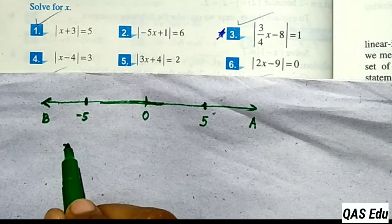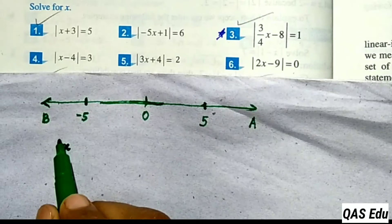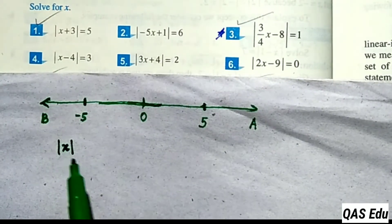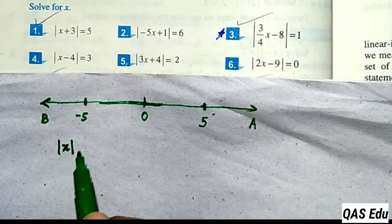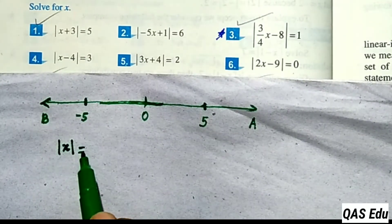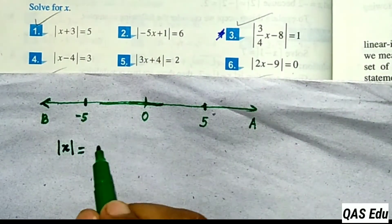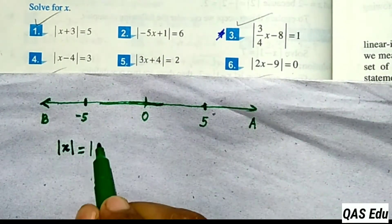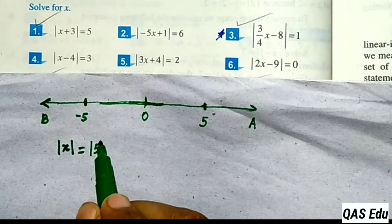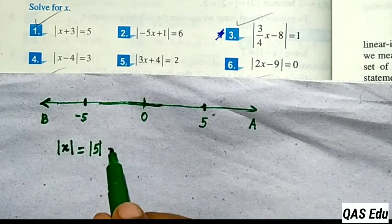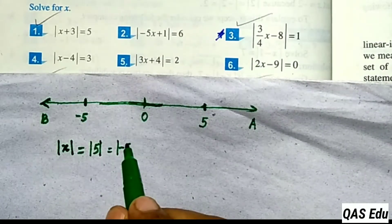For x, the absolute value represents distance — and distance is always positive. Absolute value is always positive.